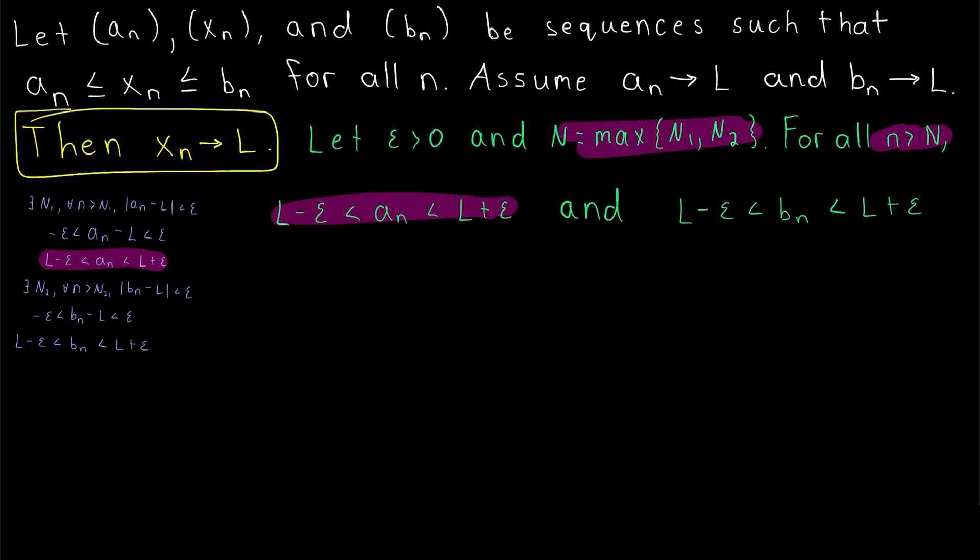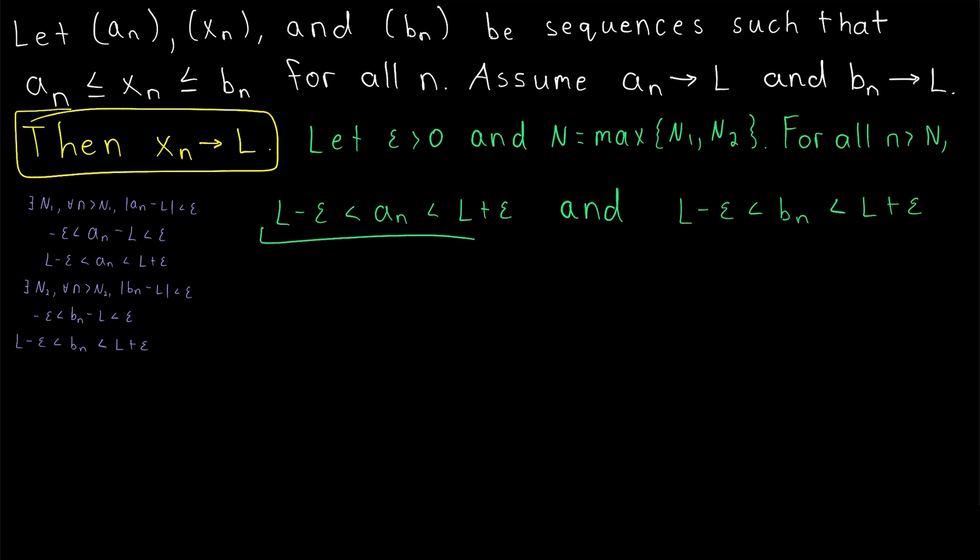we are guaranteed this inequality with a_n and this inequality with b_n. The magic happens when we combine both of these with the given inequality that every term of x_n is between a_n and b_n.